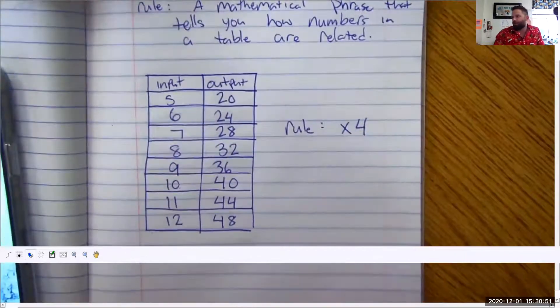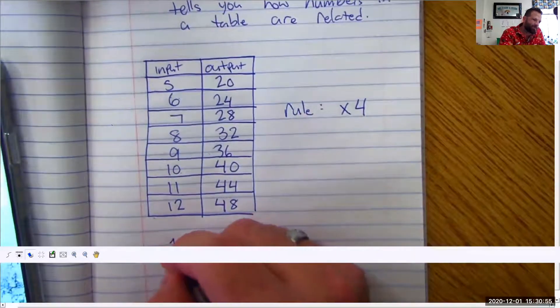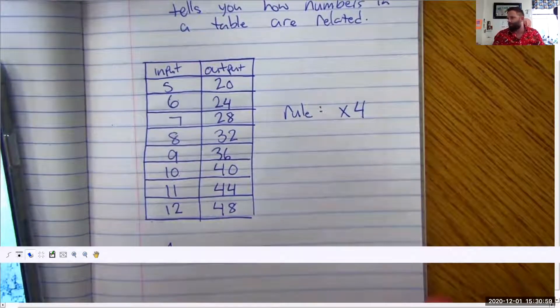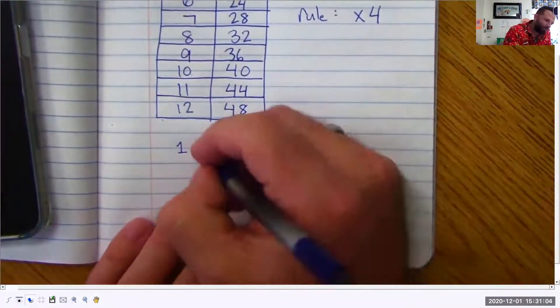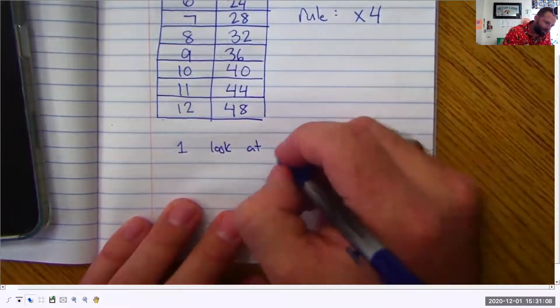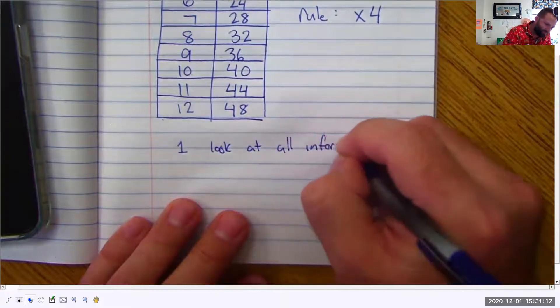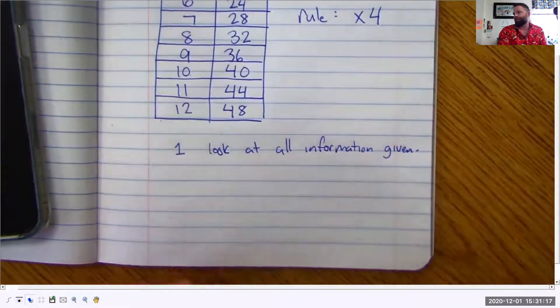Now here's how you figure out how to do this rule or how to make sure that it works. First things first. Okay. Look at all the information that's been given. Why is that ribbon still popping up down there? My goodness. Like go away. Okay. Look at all the information given.